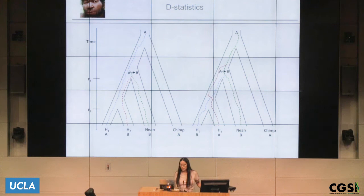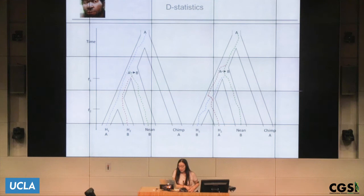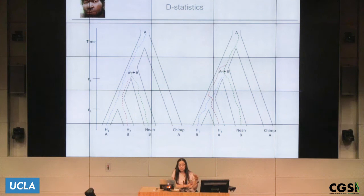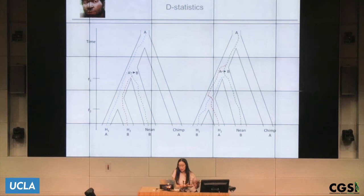You don't need introgression to get ABBA and BABA patterns — you can have incomplete lineage sorting, where just by chance you get these patterns. In that case, the Neanderthal and H2 coalesce first, but they coalesced in the ancestral population of all three. There was no introgression — it's just shared genetic variation, which still creates an ABBA pattern. For the BABA pattern, it would be H1 and the Neanderthal coalescing first in the ancestral population. So in these two cases there is no introgression, but you still get ABBA and BABA patterns.